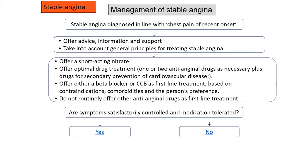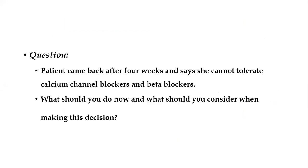After providing short-acting nitrates and advising on anti-anginal drugs and secondary prevention, the anti-anginal drugs are beta blockers, calcium channel blockers, and other anti-anginal drugs based on the condition of the patient. We then assess whether the patient is tolerating the medications and responding satisfactorily to treatment. In the previous patient, she was put on calcium channel blockers and beta blockers but couldn't tolerate them. What is the next step?